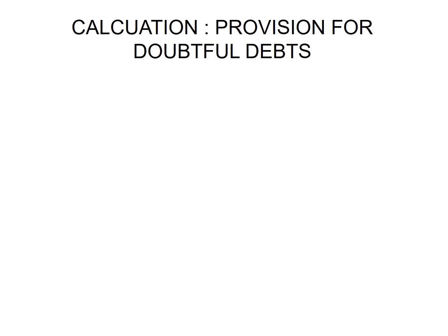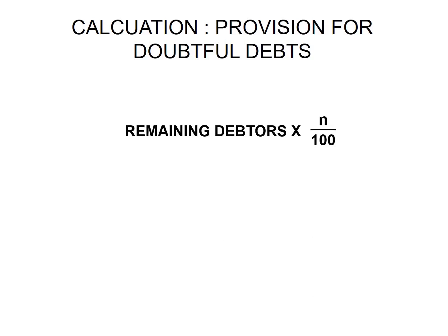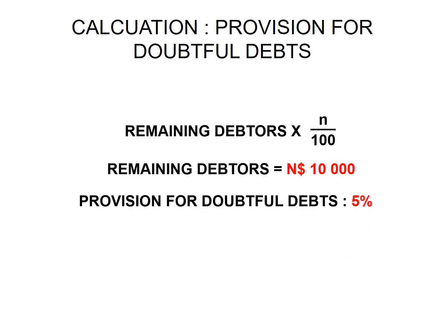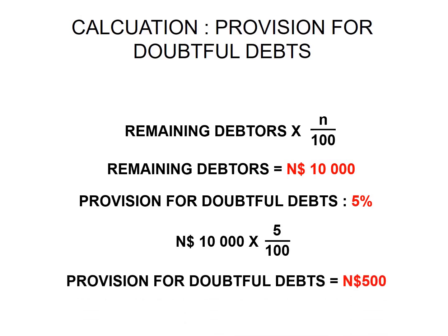Let's have a look at how we would calculate our provision for doubtful debts. The formula is: remaining debtors multiplied by a percentage over 100. For example, if our remaining debtors is 10,000 Namibian dollars and our provision for doubtful debts is set at 5%, we calculate 10,000 multiplied by 5 over 100, which gives us a provision for doubtful debts of 500 Namibian dollars.